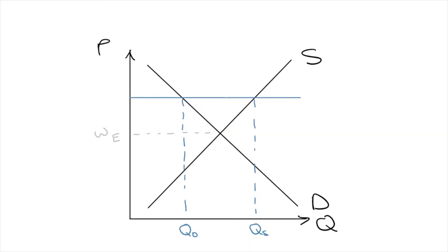Let's start with analysing the minimum wage using a labour market diagram. This has quantity of labour on the bottom axis and wage on the vertical axis. A minimum wage is a price floor. Because this often sits above the market equilibrium, the supply of labour will exceed the demand for labour. This means that there are more people looking for jobs than there are jobs available — in other words, an excessively high minimum wage can cause higher unemployment.